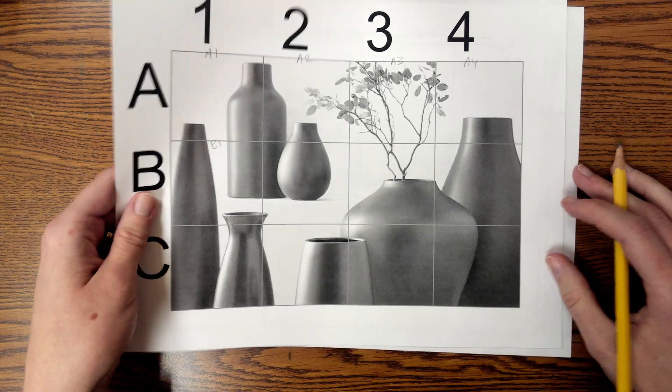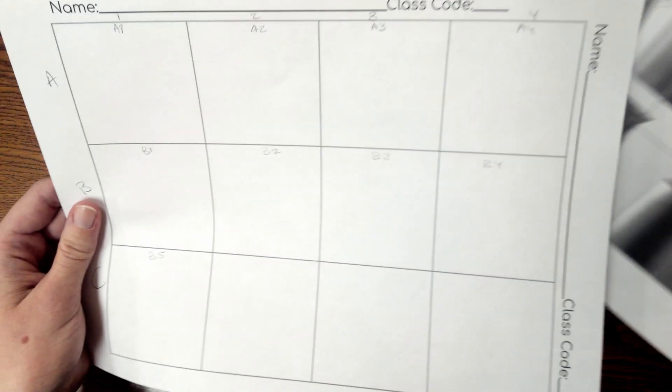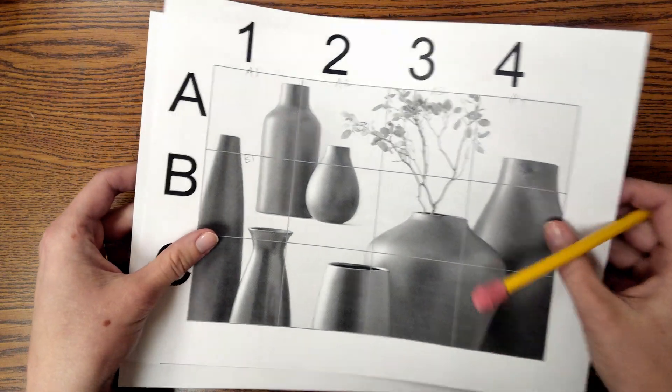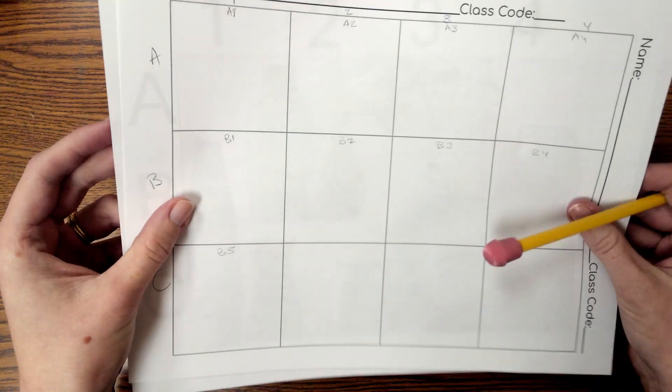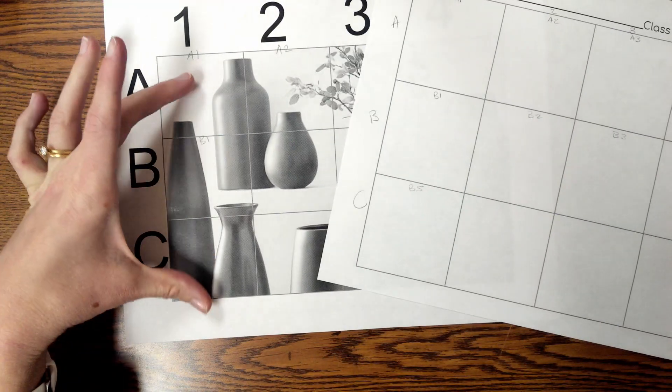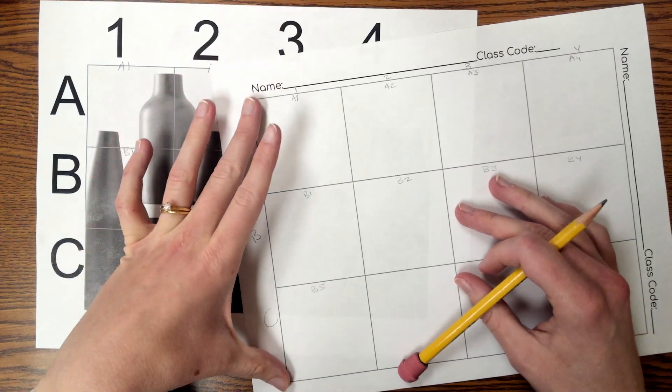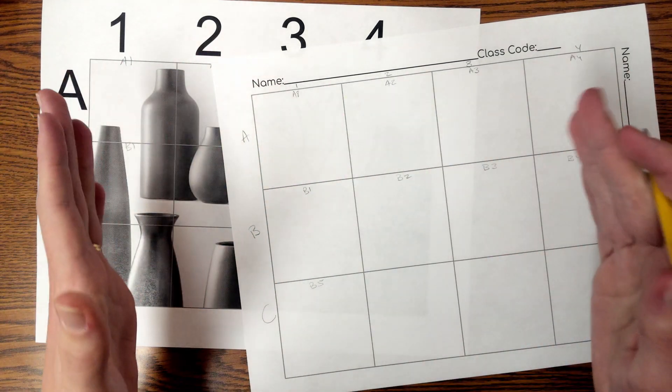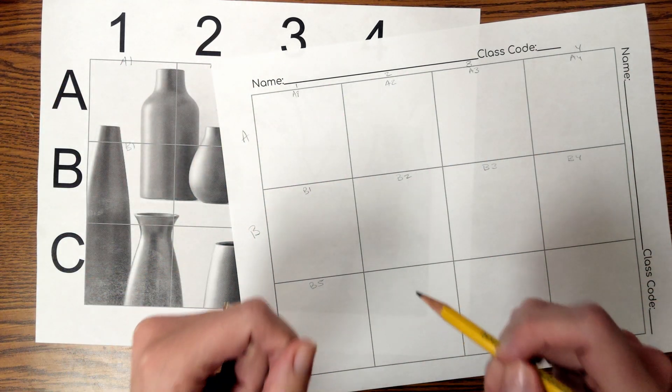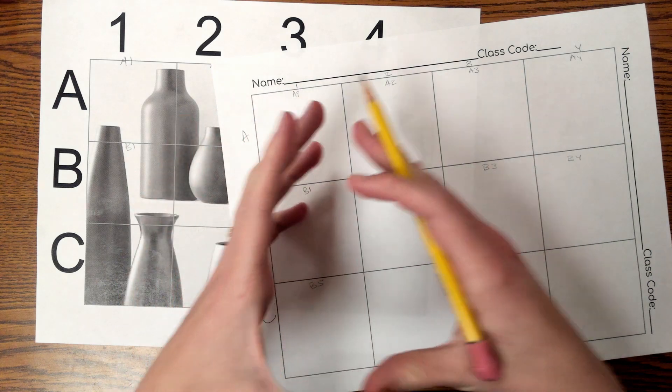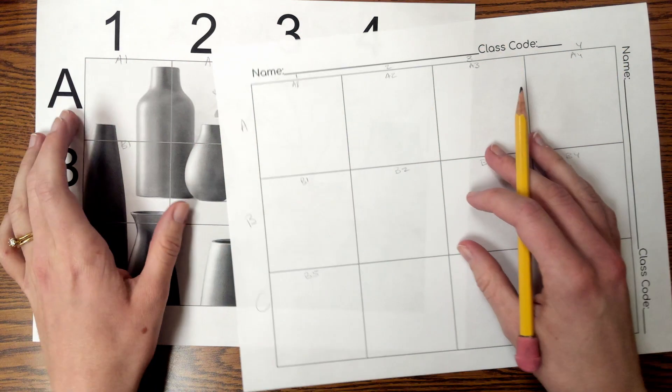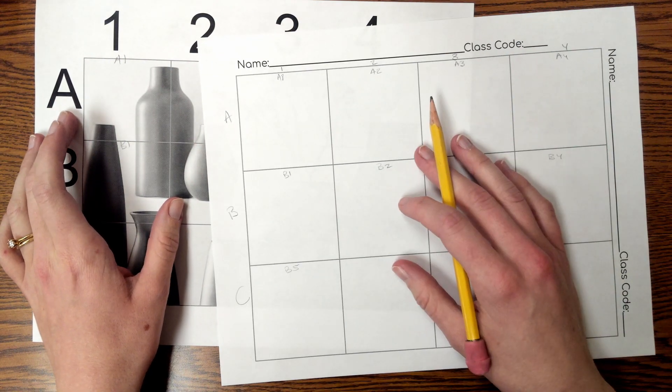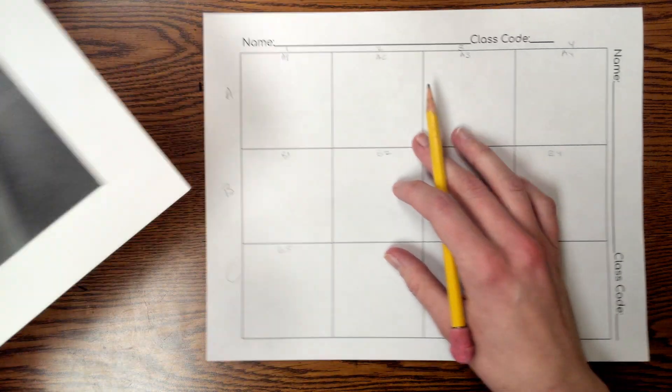I want to clear up a misconception before we get started. One of the things that a lot of students want to do on impulse is to trace. Today, the size of the picture and the size of these are intentionally different, so that you have to actually practice the skill that we are doing, which is enlarging an image. If you're just trying to trace, we're not going to be able to practice the grid drawing skill.